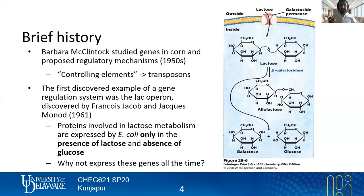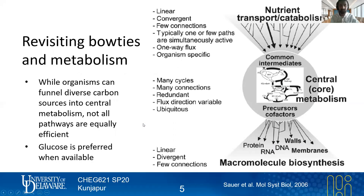You might ask, why not express these genes all the time? We can go back to the bowtie perspective on metabolism and remind ourselves that even though organisms can take up so many different kinds of nutrients, funneling these diverse carbon sources into central metabolism — not all of these pathways are equally efficient. Glucose, for just about every cell type capable of growing on it, is the preferred substrate when available, certainly for E. coli.